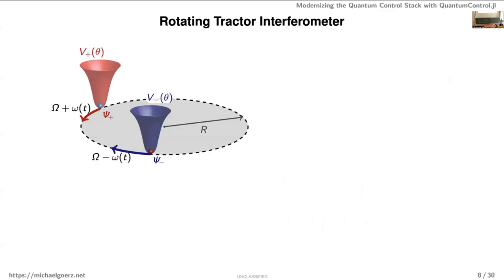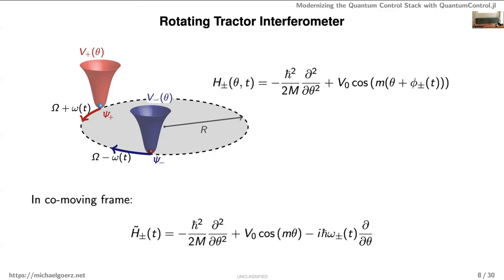Looking at a single atom in one lattice site, you have a cup-shaped trap that you can rotate — this enables standard atom interferometry. You start with one atom in one spin state, apply a pulse to put it into a superposition of two spin states, then accelerate one spin state clockwise and the other counterclockwise. After reaching constant rotational speed and then decelerating, you recombine with another pulse, and any rotation accumulates a phase visible in the population difference.